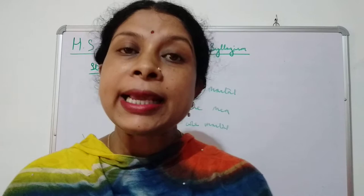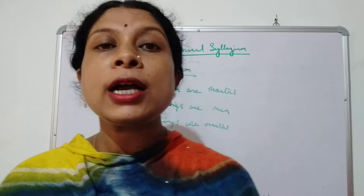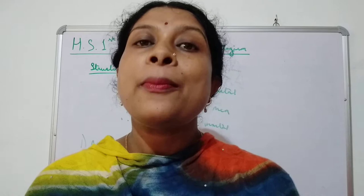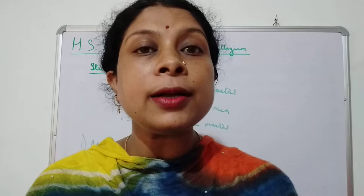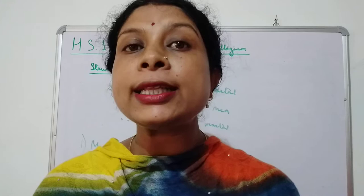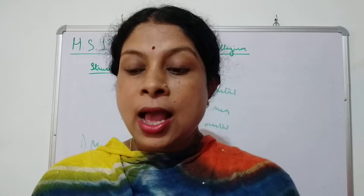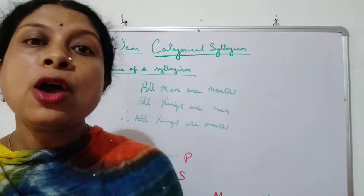These three terms have been given specific names. The predicate of the conclusion is known as the major term. The subject of the conclusion is known as the minor term. And the term which occurs in both the premises but not in the conclusion is known as the middle term. So if asked: what is the major term? — it is the predicate of the conclusion. The minor term is the subject of the conclusion. The middle term occurs in both premises but not in the conclusion.